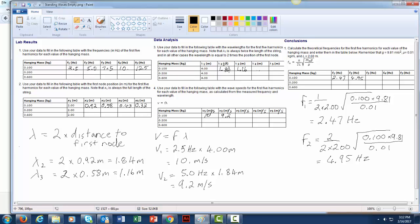Now I wanted to show you how you can get these values here. This is for the wavelength. This is lambda, and it's going to be simply two times the distance to the first node. So let me explain that.